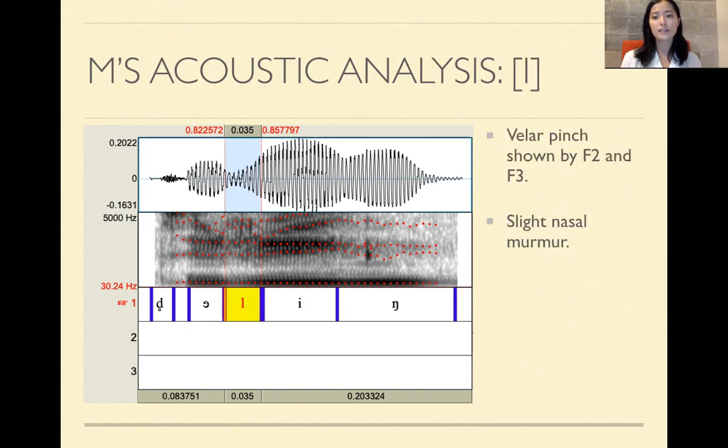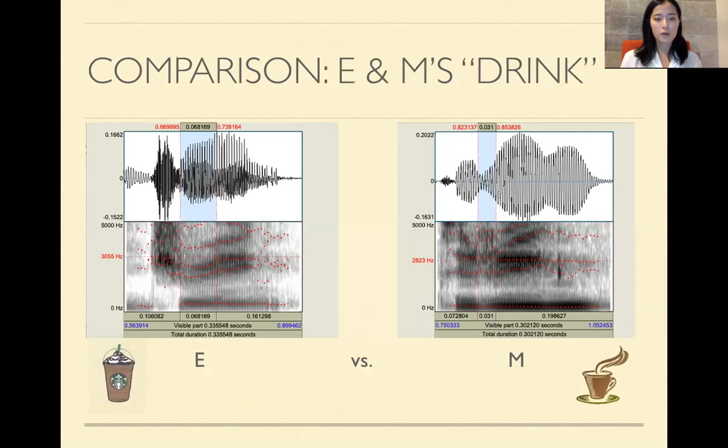And this is the /e/ again. So it has the lowest F1 out of all the vowels. So F1 is 280 hertz, F2 is 2389 hertz, so very high F2, and F3 is 2990 hertz. So again F3 really didn't move that much or not at all really. And then this is the /ŋ/, there's a velar pinch shown by the increase in F2 and meeting up with the F3, and there's a very slight nasal murmur. Hers less so than E's, which we'll see in a side by side comparison later.